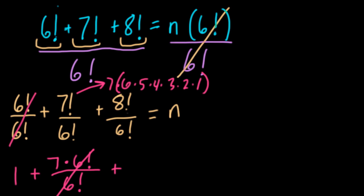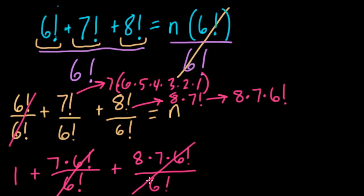And then in the last step, we have 8 factorial divided by 6 factorial. And here we're going to use the same technique. I can think of 8 factorial as 8 times 7 factorial, which can be thought of as 8 times 7 times 6 factorial. Instead of thinking of it as 8 factorial divided by 6 factorial, I can think of it as 8 times 7 times 6 factorial over 6 factorial. And here these 6 factorials cancel out and we have 8 times 7.